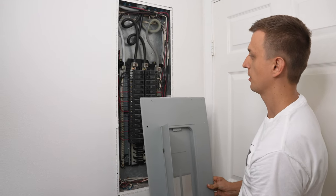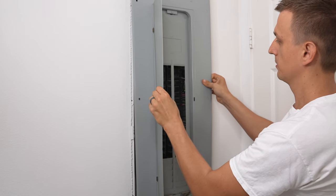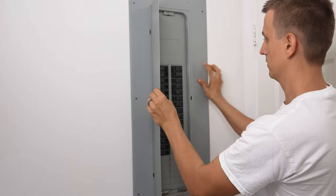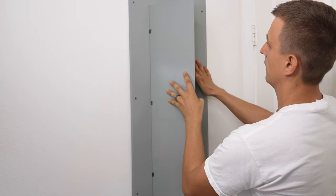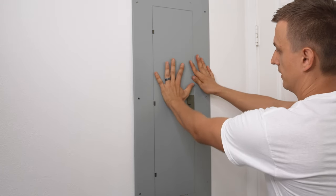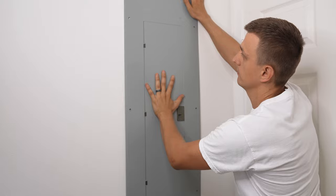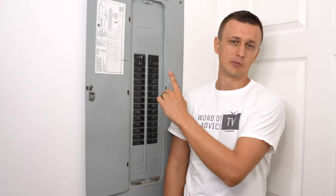Put the panel back on the same way you took it off, nice and slow and carefully. Line it up with all the breakers. I like to close the door and just hold it firmly against the wall while I put at least two screws in first before I let it go. And that is how you replace a breaker. I'll see you in the comment section.